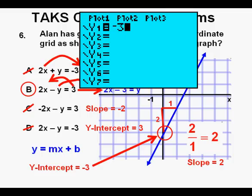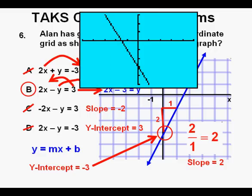And then go to the y equals to enter answer A. First place the negative 3 on the right side of the equation. Then we subtract 2x to solve for y. Then press graph. We have the correct y-intercept but not the correct slope.